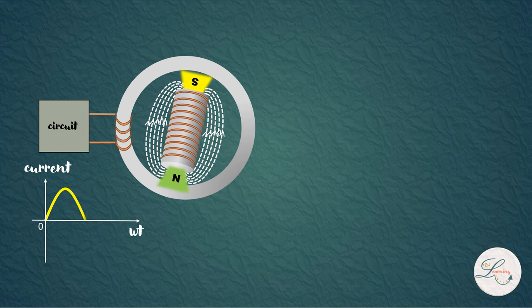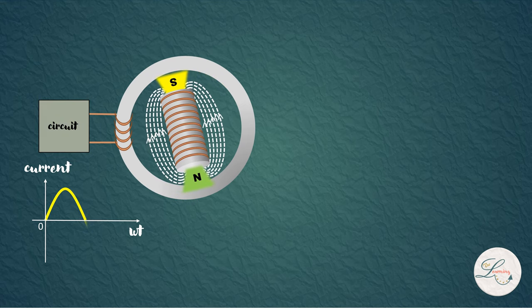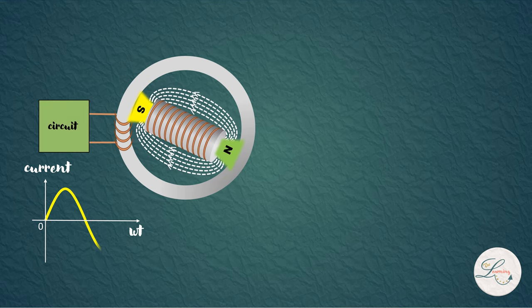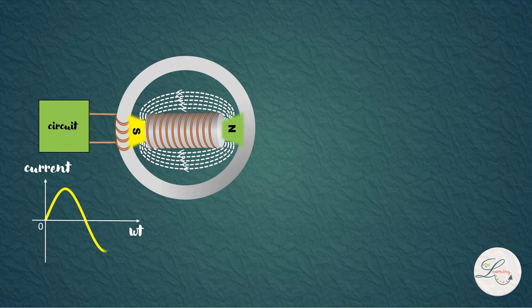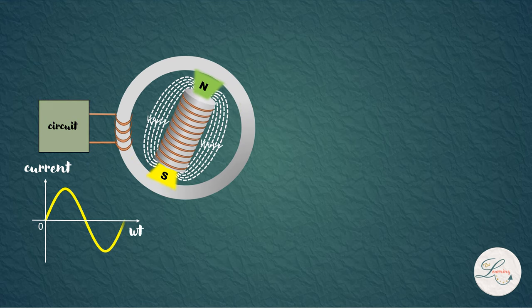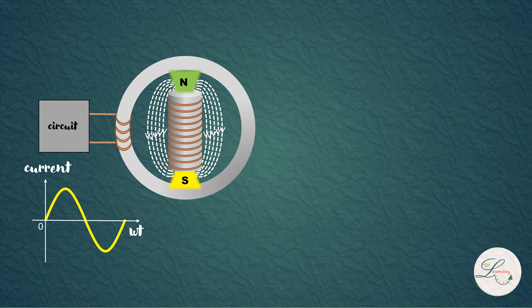As the south pole approaches the conductor, the current flow increases and reaches its peak value in the opposite direction. As the south pole starts to move away, the current flow decreases in the opposite direction and reaches zero. This process continues.